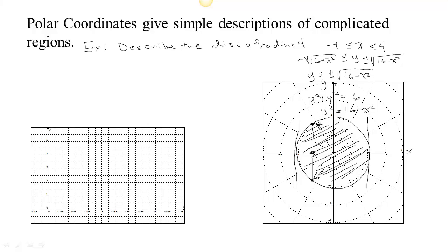If we describe this in polar coordinates, it's very simple. Basically, to visit every point in this disk once, you just have to turn all the way around. Theta goes from 0 to 2 pi. The radius, as you turn around, you can walk any distance from 0 out to a distance of 4.